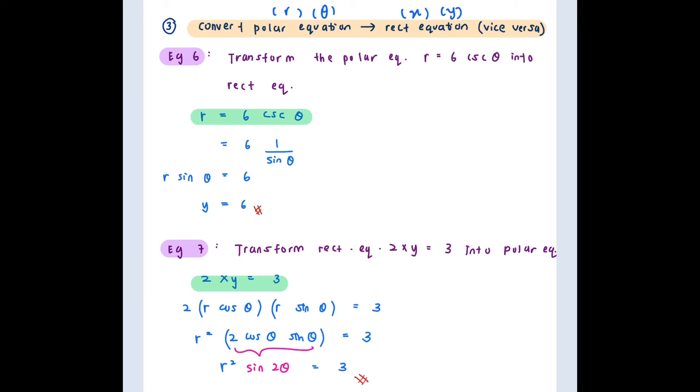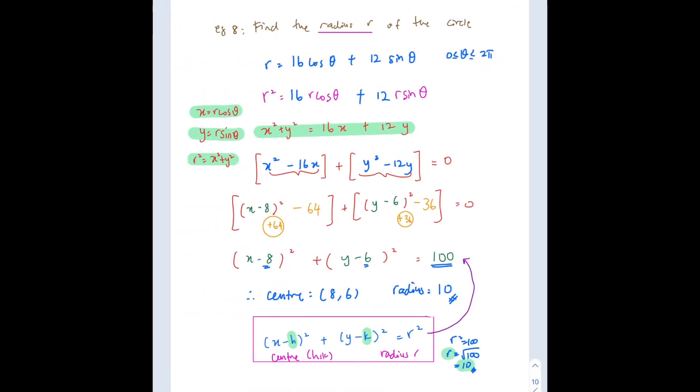Therefore, this is your final answer. This is polar equation. R squared sin 2 theta is equal to 3. So let's go to the last example here.